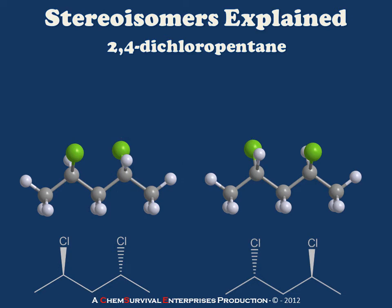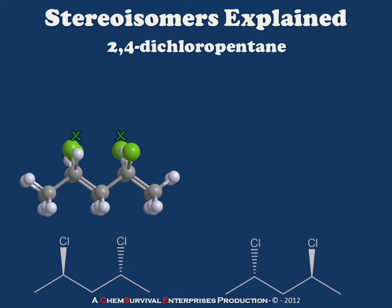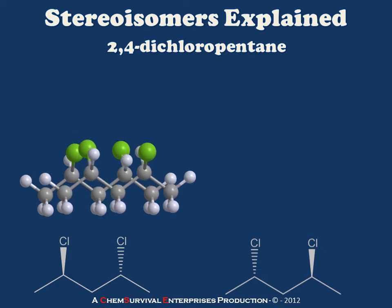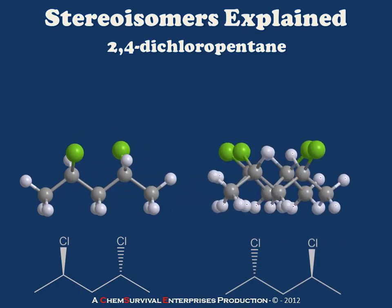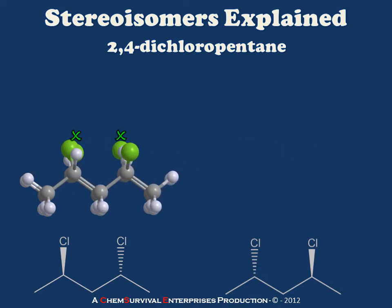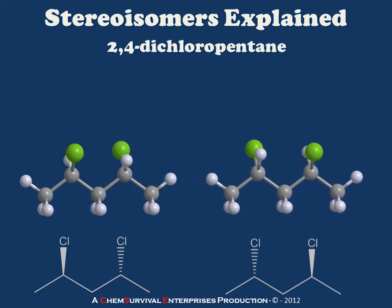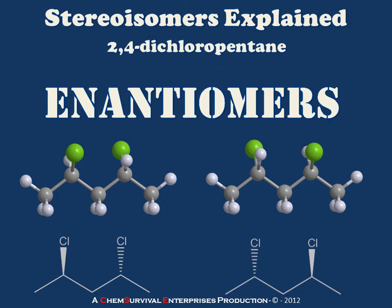The next step in comparing two stereoisomers is to determine whether or not they are superimposable. If I move my molecules in an attempt to superimpose them, we see that the chlorines do not align appropriately. Any attempt to create this alignment by rotation or translation of one or both molecules fails. Because of this, we can say these two molecules are non-superimposable. So we've determined that they are non-superimposable mirror images of one another — this is the definition of an enantiomer.